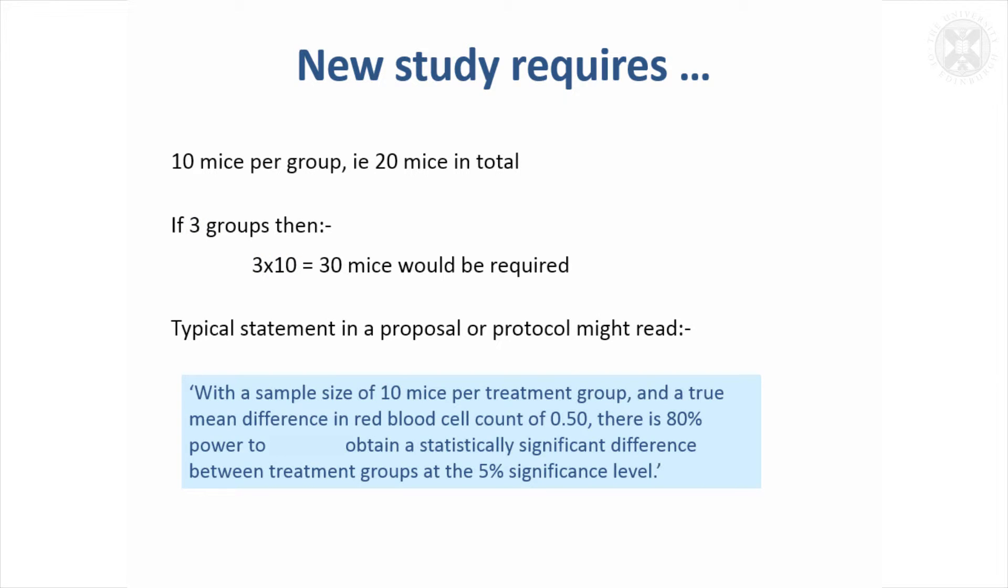It's becoming more common now for if you're applying for funding to have to put a statement about how you've done your sample size calculation in your proposal and a part of the experiment form where you're asked to justify the number of animals. A statement like this would be appropriate: with a sample size of 10 mice per treatment group and a true mean difference in red blood cell count of 0.5, there is 80% power to obtain a statistically significant difference between the groups at the 5% significance level.